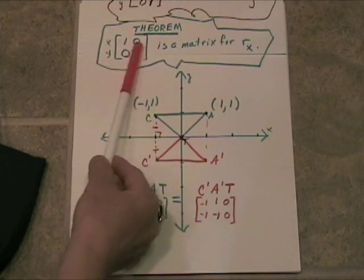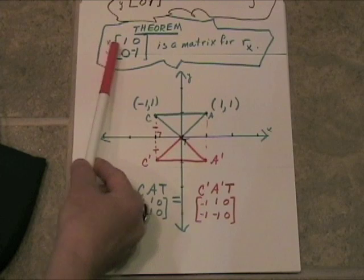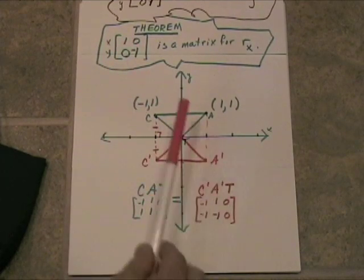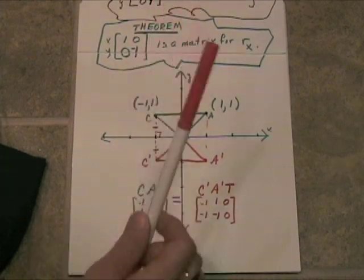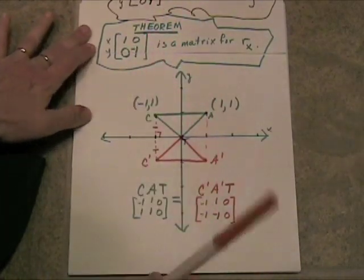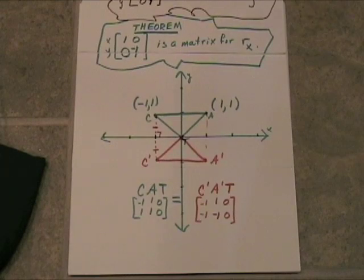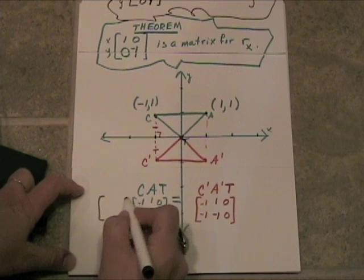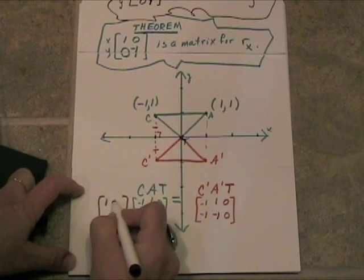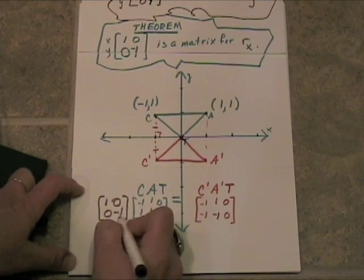The first row of this multiplier matrix will keep the x's the same. It's the second row here, this one, the identity matrix with a negative one right there. That is what's going to change the values of the y coordinates. One zero zero negative one.